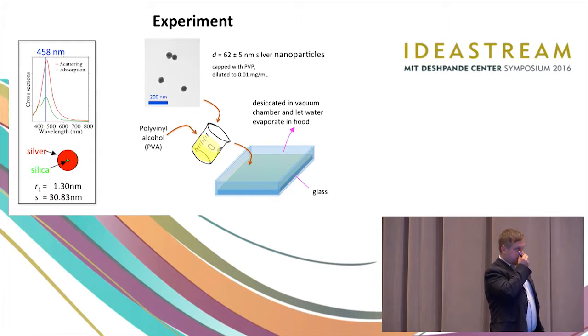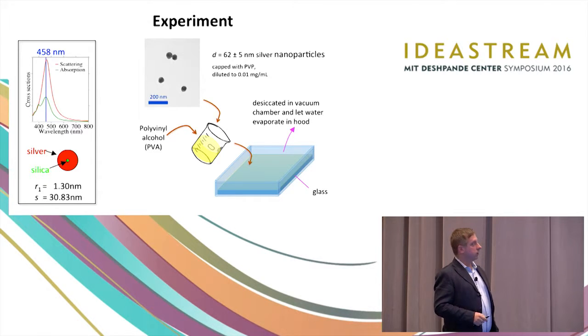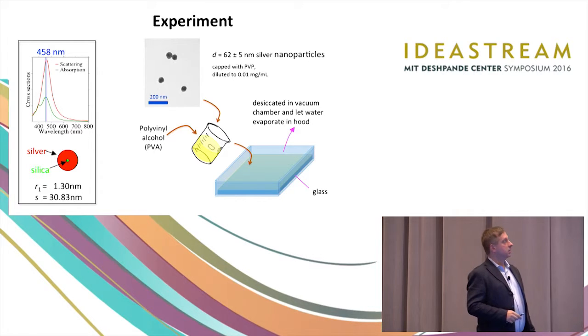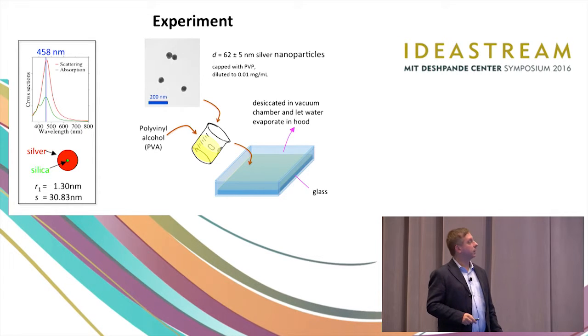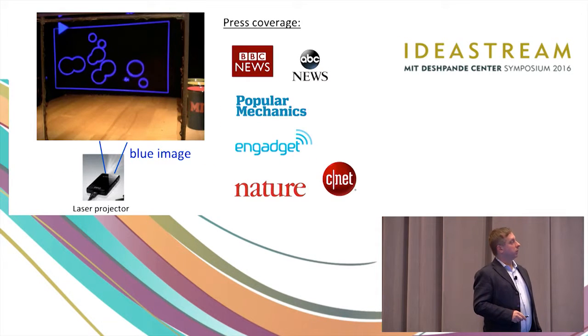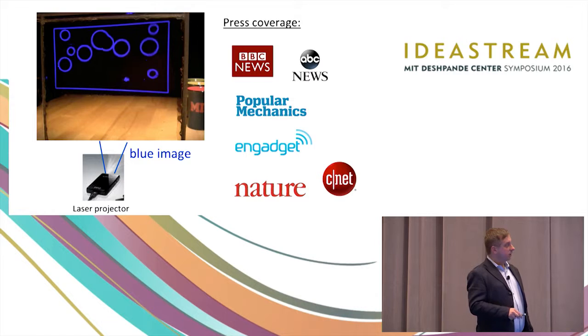So this is the first thing that we did is we started with silver nanoparticles. We would like this to be narrower than it is and we would like it to have no absorption, but nevertheless, this was sufficient to prove a concept of how this works. In the first experiment, we combined it with polyvinyl alcohol and put it on the glass and let it evaporate. Now we have better ways of fabricating it, but even those results were already pretty encouraging.